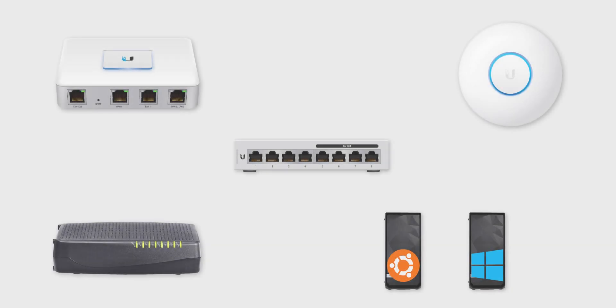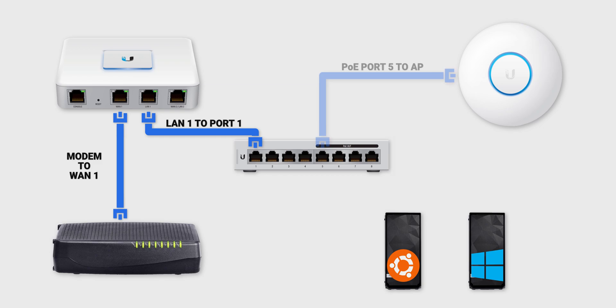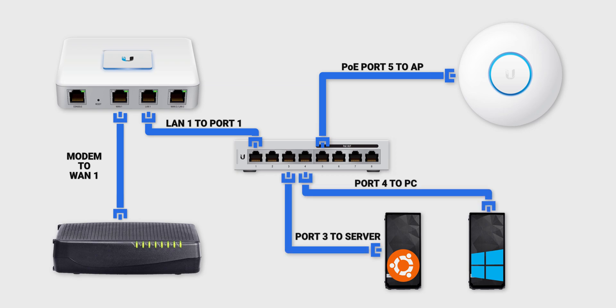The UniFi controller is installed and ready to go. Disconnect the old router and connect the new UniFi equipment. Connect the main Ethernet cable from your ISP modem to the WAN port on the USG router, then connect another Ethernet cable from LAN 1 to port 1 on the PoE switch. Connect the access point to one of the PoE ports so it gets data and power simultaneously. The computer and server will be on ports 3 and 4. Power the USG, then the PoE switch, and once the status LED on all three devices turns solid white, you can start configuration via the UniFi controller.